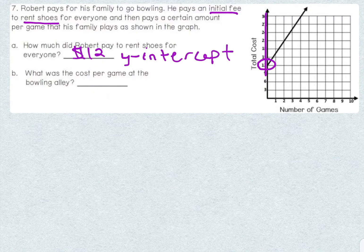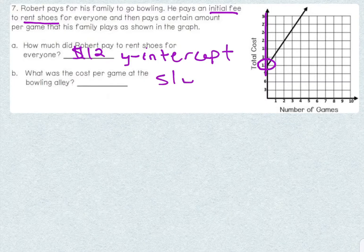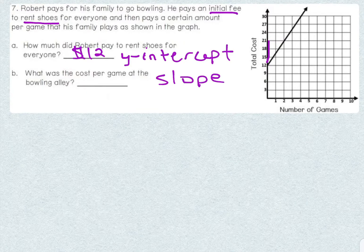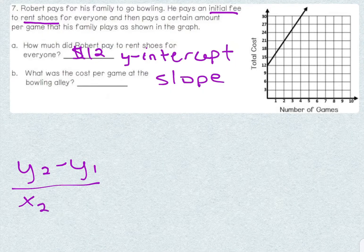Now for our next question: what was the cost per game at the bowling alley? What do you think this represents? That's right — this represents the slope. Now in a graph like we practiced before, we could find the change in y over the change in x and count the rise over the run, but we have to be careful here — notice that our y-axis doesn't count by ones. It counts by threes, but our x-axis counts by ones. So this would be a good time to practice using our formula for finding the slope of a line,